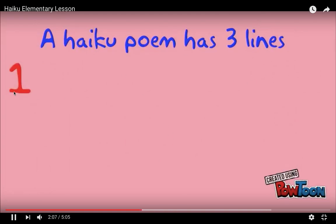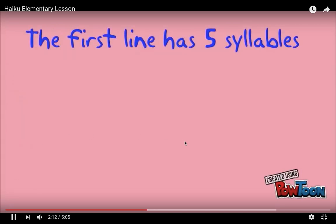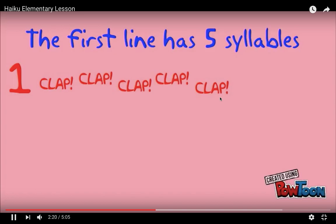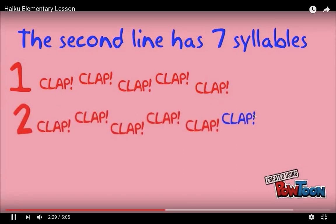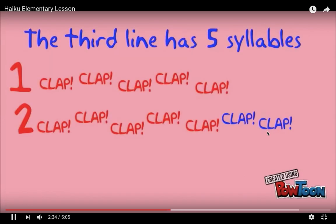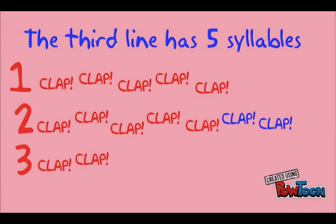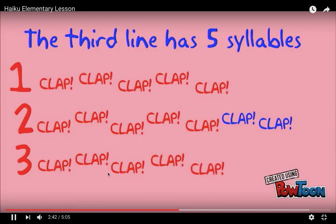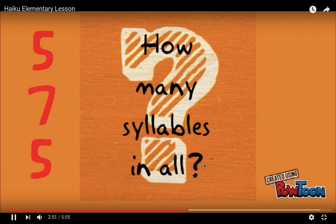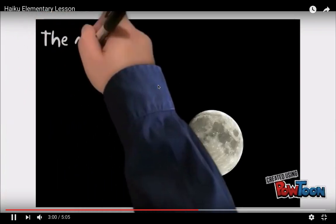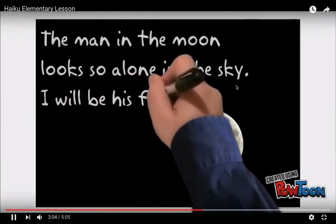We are ready to count the haiku syllables. A haiku poem has three lines. The first line has five syllables — clap, clap, clap, clap, clap. The second line has seven syllables — clap, clap, clap, clap, clap, clap, clap. The third line has five syllables. Five, seven, five — how many syllables in all? Seventeen! For example: 'The man in the moon looks so alone in the sky — I will be his fan!'